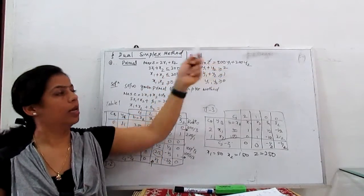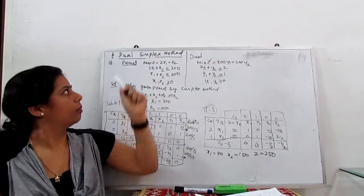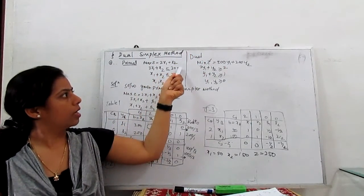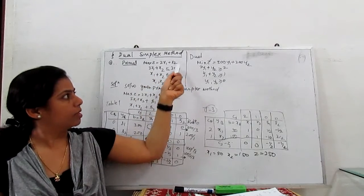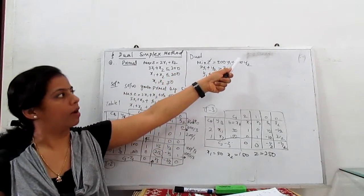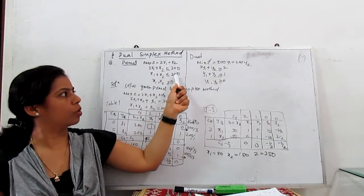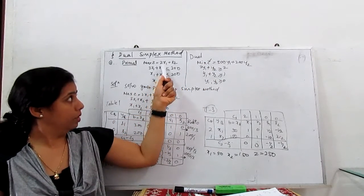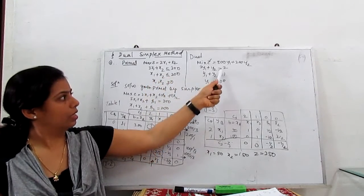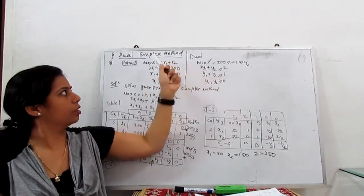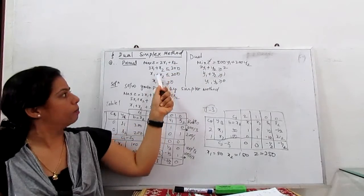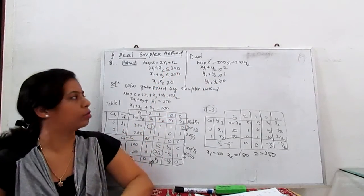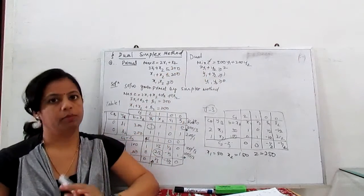First, write the dual. To transfer to the dual, we convert maximum to minimum. Minimum z' = 300y1 + 200y2, where the new variables are y1 and y2. The constraints become: 3y1 + y2 ≥ 2, and y1 + y2 ≥ 1, with y1, y2 non-negative. This is our basic dual formulation.